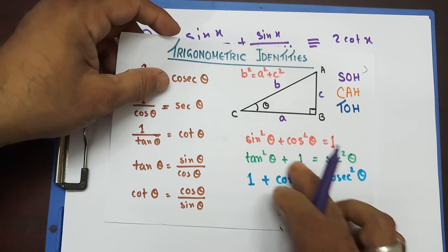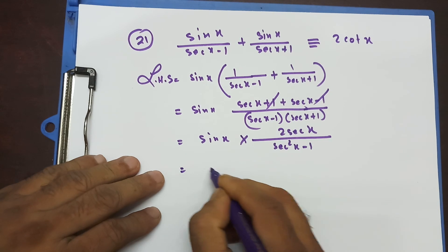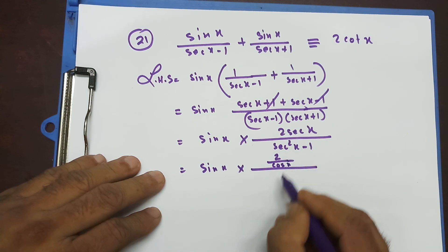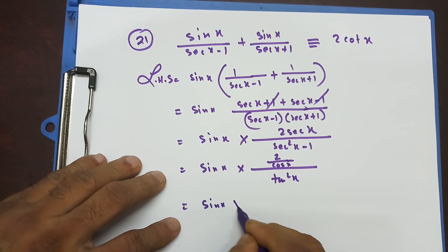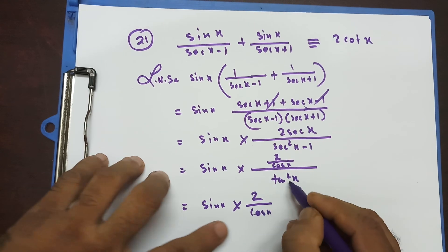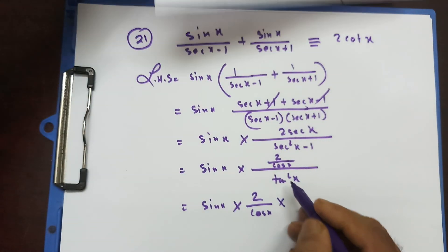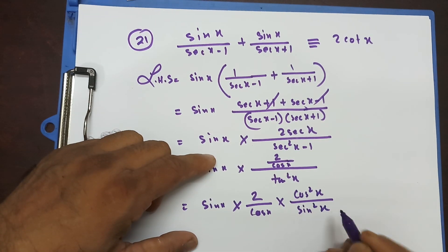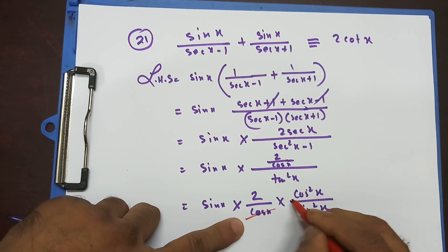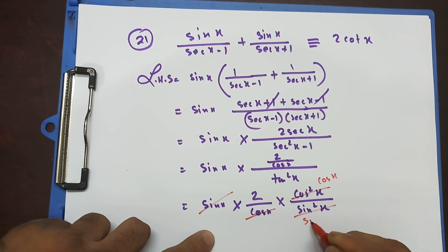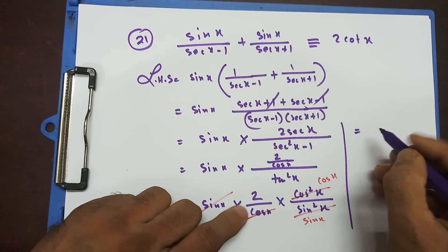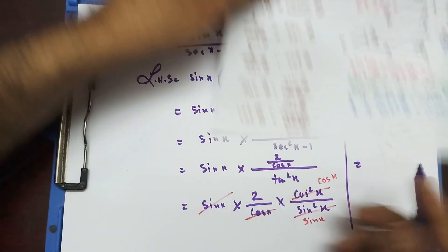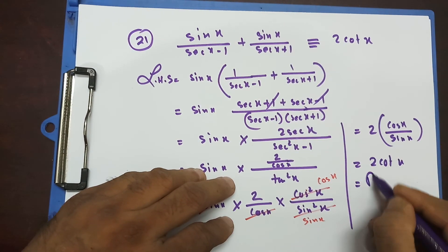Now sec²x minus 1 can be written as tan²x. So I write sinx times 2/cosx over tan²x. Writing tanx as sinx/cosx, cos²x goes up and sin²x comes down. I can cancel cosx and write sinx, and I end up with cosx/sinx — but with the factor of 2 — giving me 2cotx, which is my right-hand side. Proved.